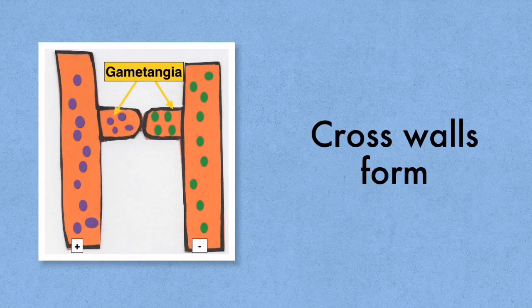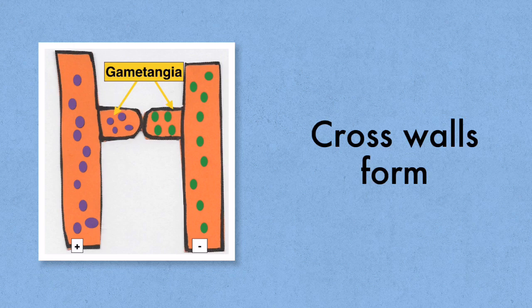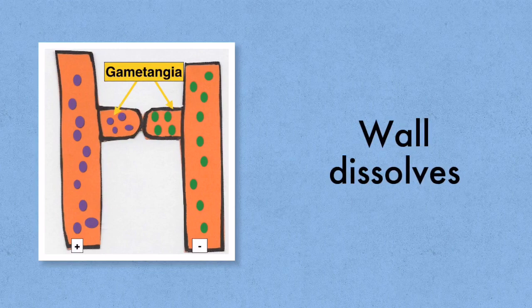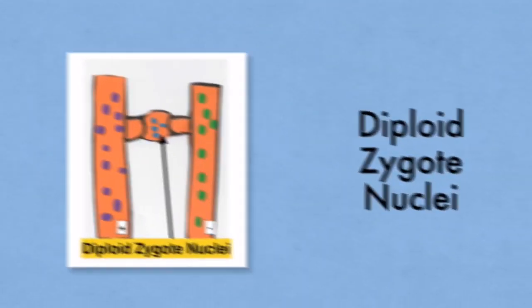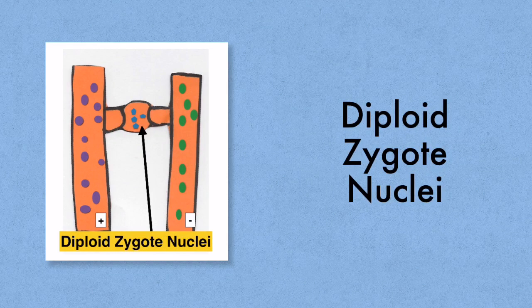Next cross walls form, blocking off those nuclei and preventing them from going anywhere. Now they're known as gametangia. The wall separating the two gametangia dissolves and those nuclei from the chemically opposite strains fuse, forming many diploid zygote nuclei.